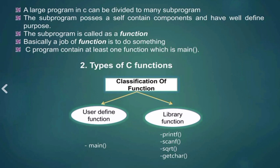A large program in C programming language can be divided into many sub-programs. The sub-program possesses self-contained components and have well-defined purpose. This sub-program is called as a function. Basically, a C program contains at least one function which is main function.